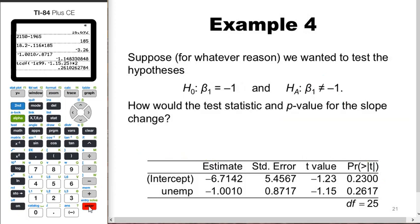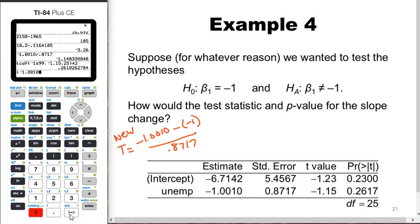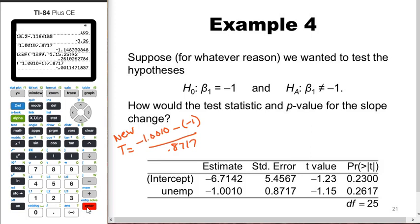Suppose we want to test the hypotheses that β₁ equals negative one versus not equal to negative one. Since the null value is not zero, we need to recompute the test statistic. The new test statistic is: point estimate negative 1.0010, minus the null value of negative one (which becomes plus one), divided by the standard error 0.8717. Using parentheses: negative 1.0010 plus 1, divided by 0.8717.